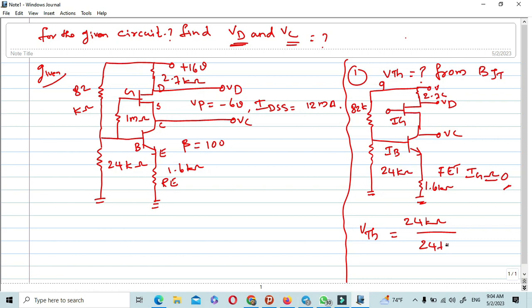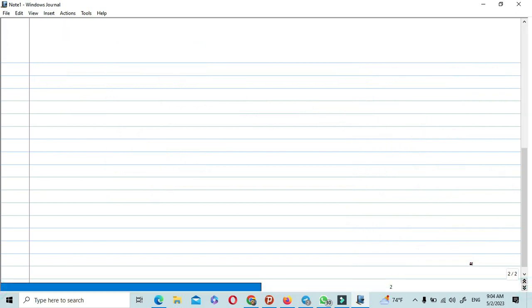VTH equals 3.62 volts divided by the 16 volts. So this is the 16 voltage. Actually VTH equals 3.62 volts by using the Thevenin equivalent circuit.